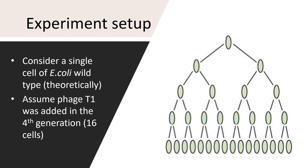According to the experimental setup, in the fourth generation the scientists added T1 bacteriophages. Bacteriophages are viruses that infect bacteria and lyse them through the lytic cycle. This wild type E. coli is sensitive to the T1 phage.